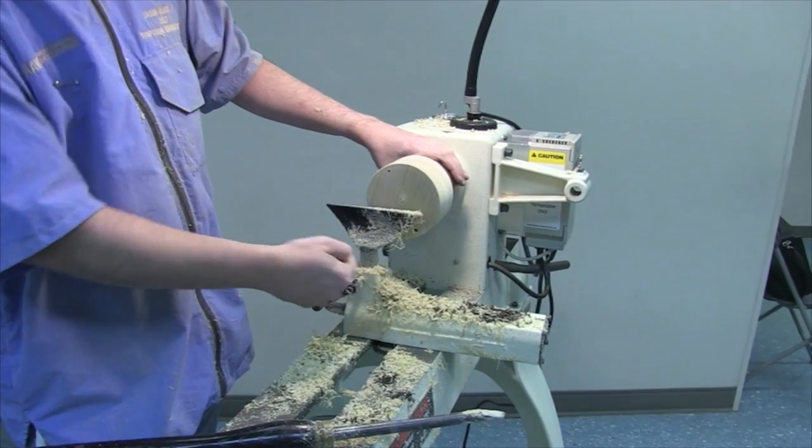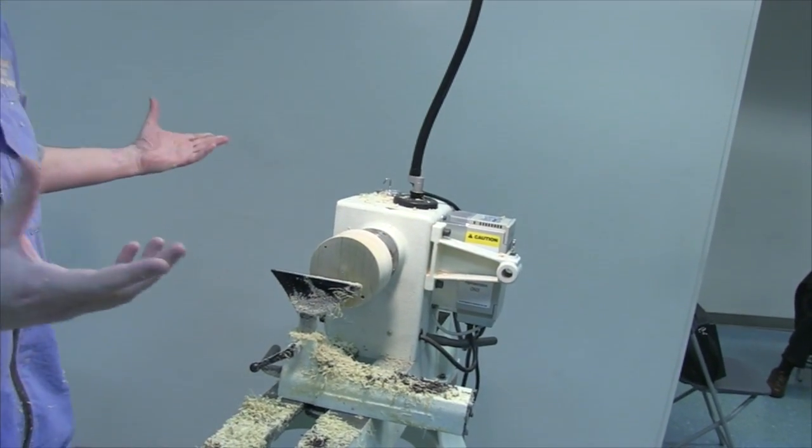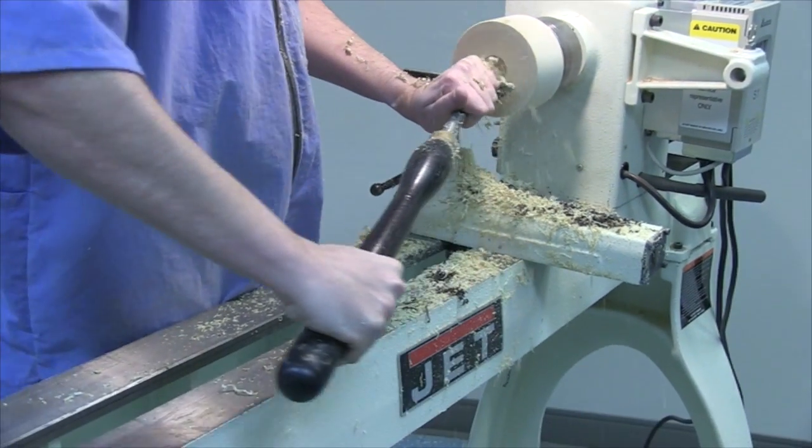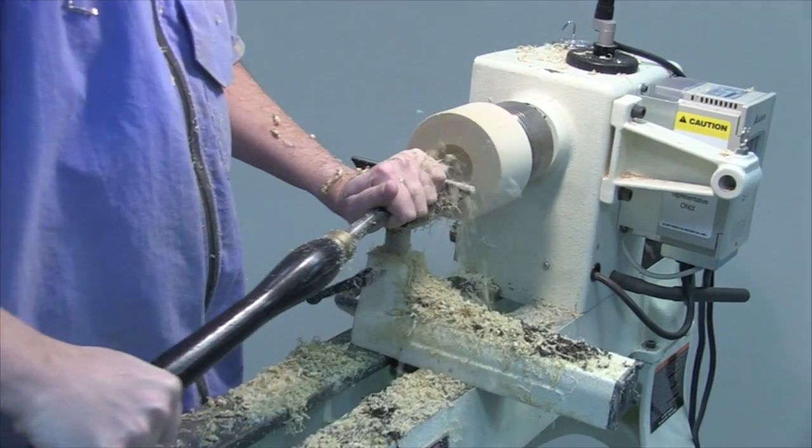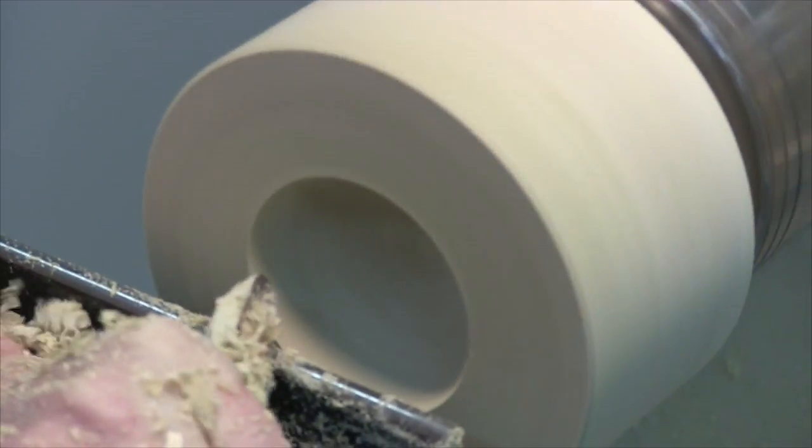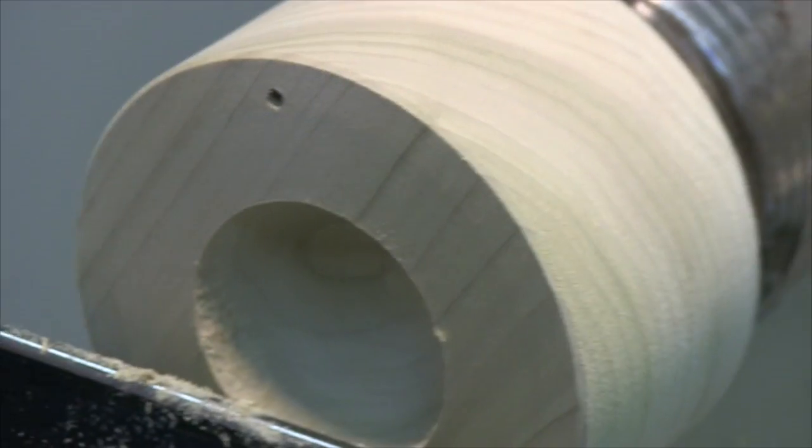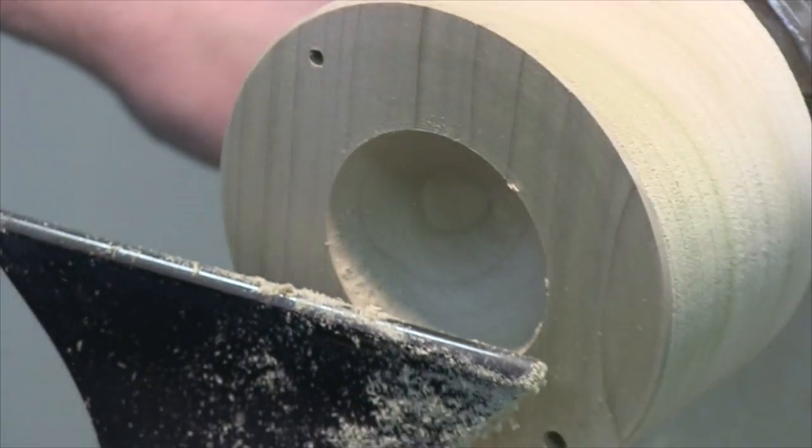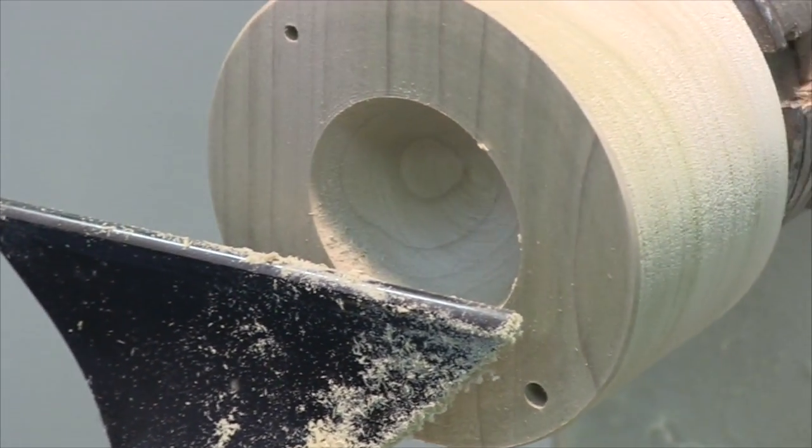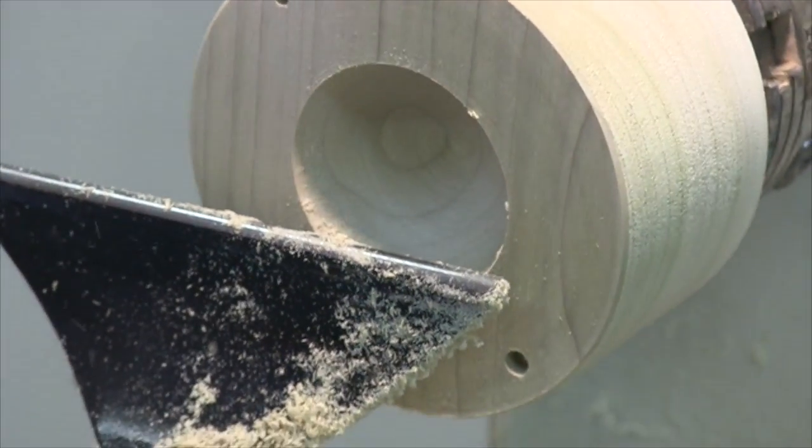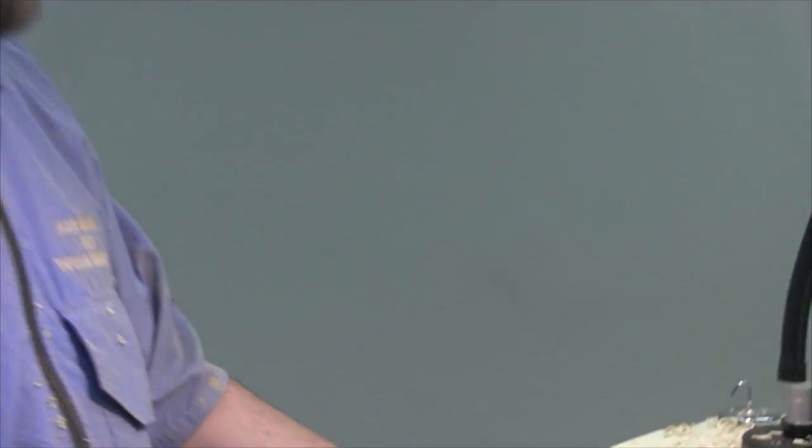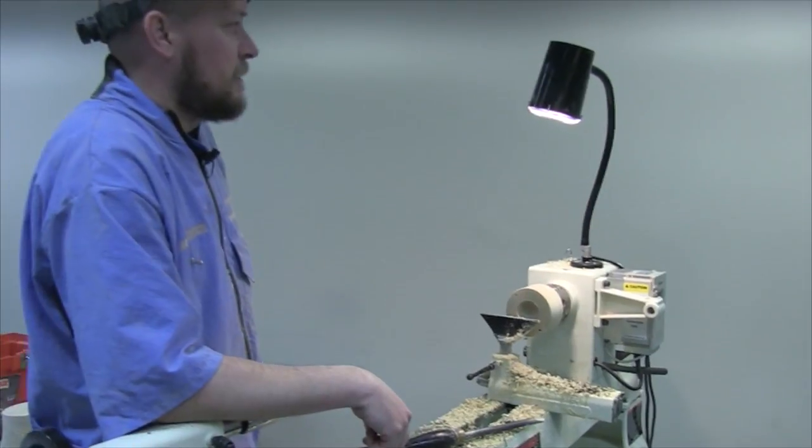Now I just need to hollow this out. This is in side grain orientation. You can see the grain running through there. It's just like hollowing a bowl, it's just a little bowl. Do you ever drill out the inside? No, I'm a turner. It's easier for me to turn it out than to go find the two-inch Forstner bit and get the Jacobs chuck set up in the tail stock. There's not much wood here.